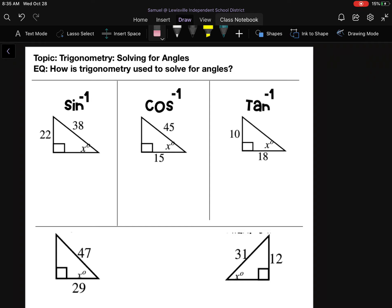Yesterday we introduced the three trigonometric ratios. We had sine, which was opposite over hypotenuse. We had cosine, which was adjacent over hypotenuse. And we had tangent, which was opposite over adjacent.